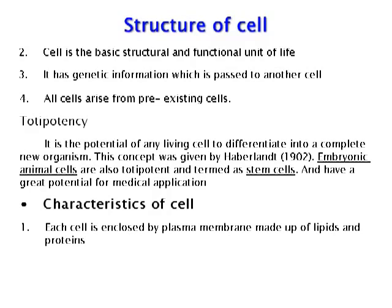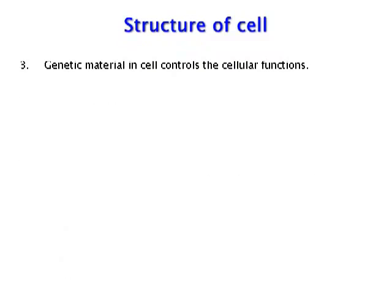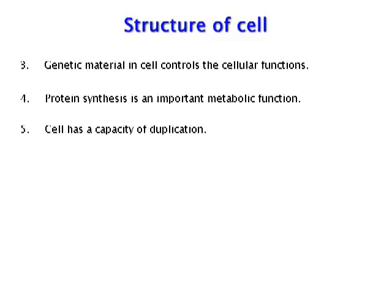Characteristics of Cell: Each cell is enclosed by a plasma membrane made up of lipids and proteins. Protoplasm in the cell consists of water and various organic and inorganic substances. Genetic material in the cell controls the cellular functions. Protein synthesis is an important metabolic function. The cell has a capacity for duplication, and genetic information is transferred by means of genes.